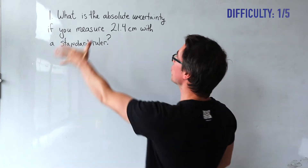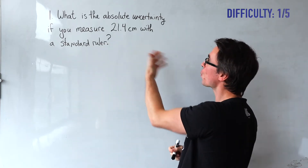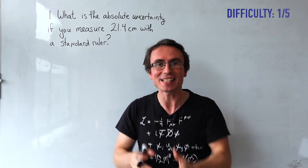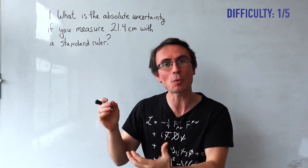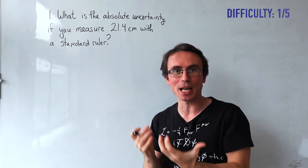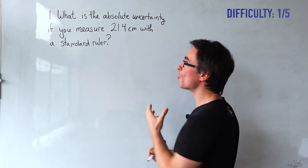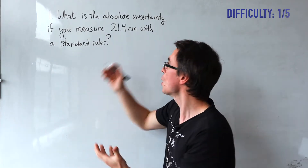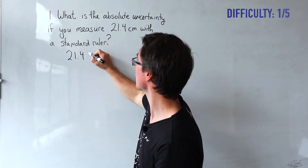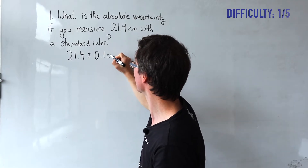Question one: what is the absolute uncertainty if you measure 21.4 centimeters with a standard ruler? The absolute uncertainty is given by plus or minus the smallest reading that you can take with that particular instrument. With a ruler, our smallest measurement will be 1 millimeter, so our absolute uncertainty in this reading will be plus or minus 0.1 centimeters.